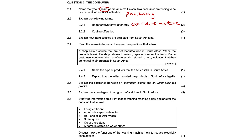Cooling-off period. So this is an amount of time, or five business working days, that the law gives a consumer who has signed a contract to cancel it without reason. So it's like a little cancellation period.